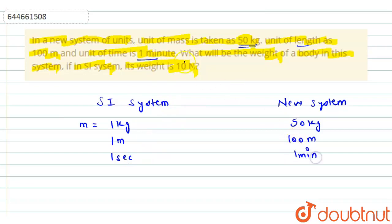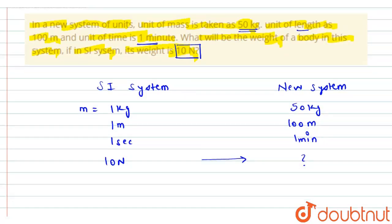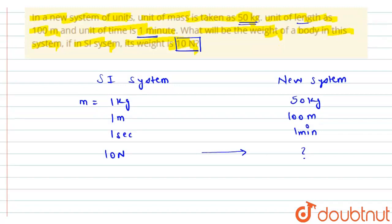So now, we are given that the weight of a body weighs 10 N in SI system, so this we have to convert into this new system. Now, we know that 1 N is given as kg meter per second square.